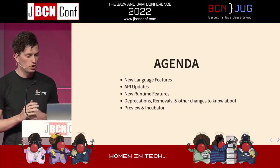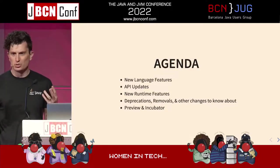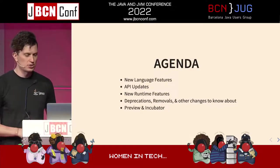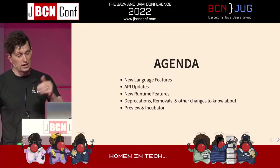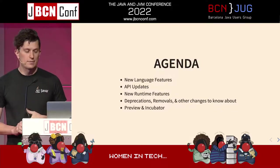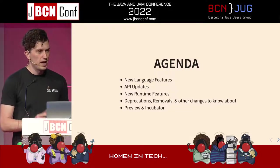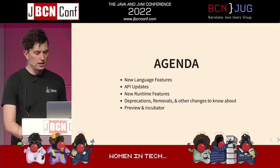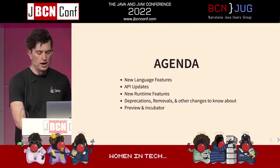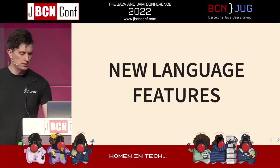The agenda covers about five different areas. First, we're going to look at some of the new language features added from JDK 11 and on, new updates to APIs, new runtime features, deprecation removals, and some other important changes to know about. And then some of the preview and incubator features that have also been added.